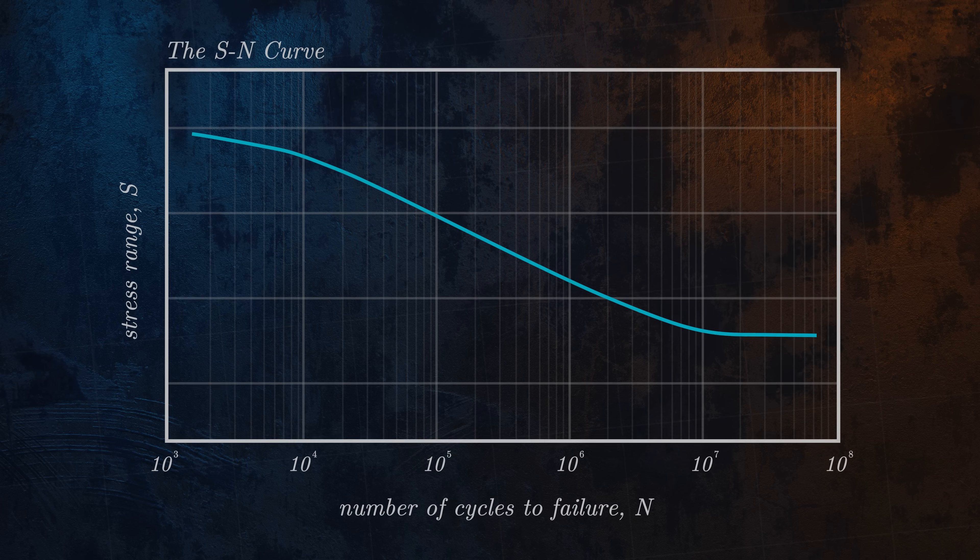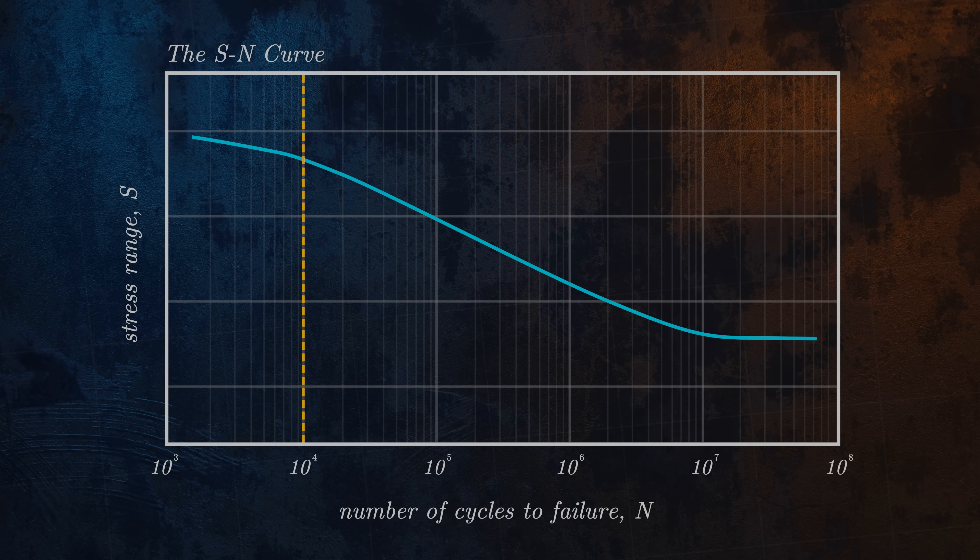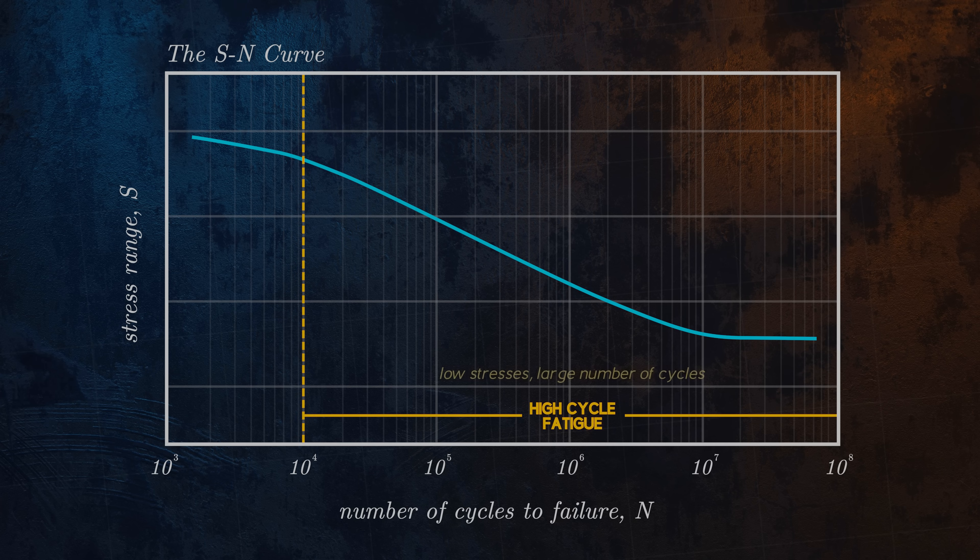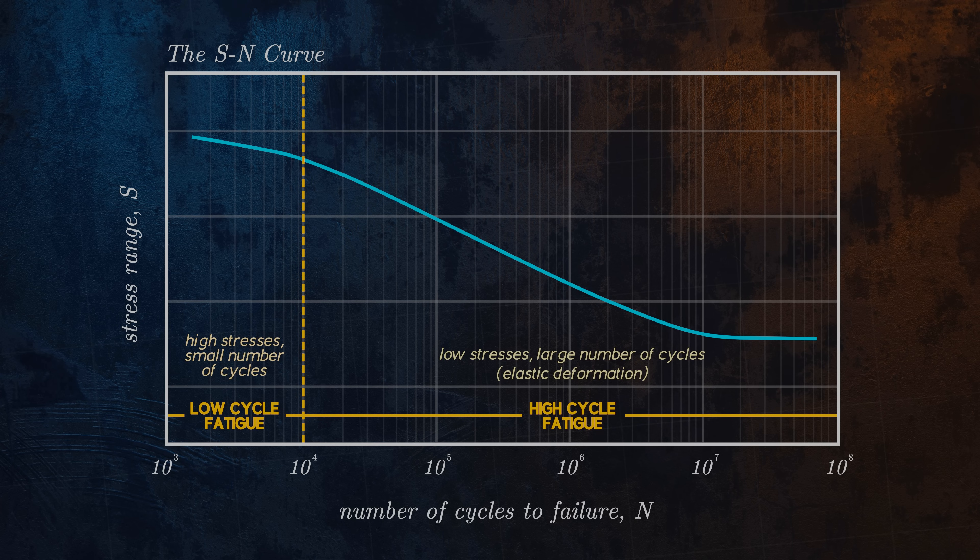It is common to differentiate between high cycle and low cycle fatigue. High cycle fatigue occurs when the applied cyclical stresses are low, and failure occurs after a very large number of cycles, typically more than 10,000 cycles. Because the stresses are low, we are only dealing with elastic deformation. Low cycle fatigue involves higher applied cyclical stresses, and failure occurs after fewer cycles. Because the stresses involved are above the material's yield stress, both elastic and plastic deformation occur.